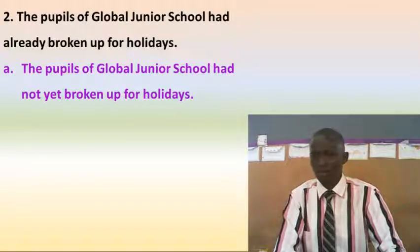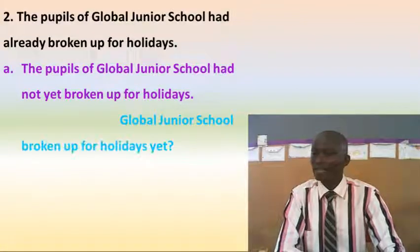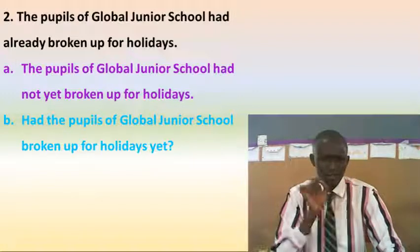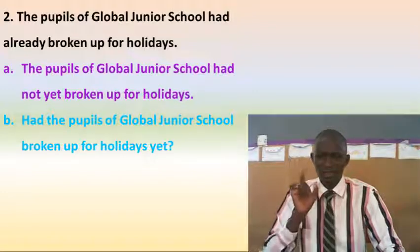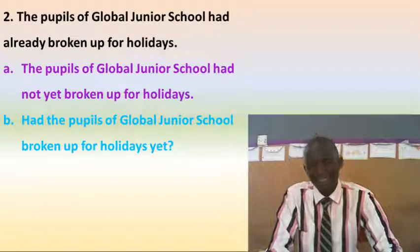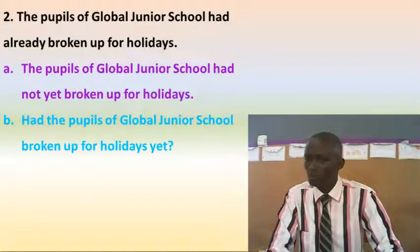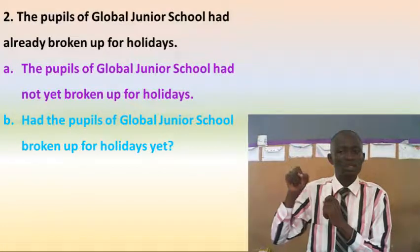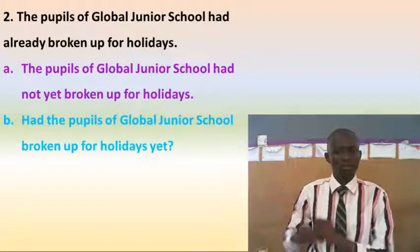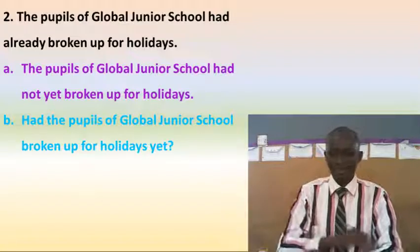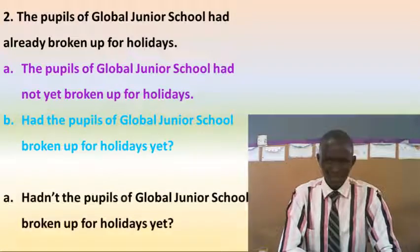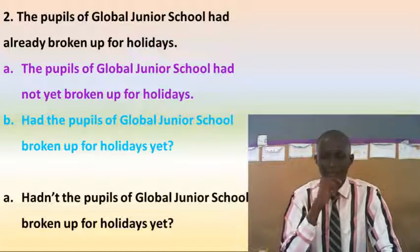For the interrogative form: 'Had the pupils of Global Junior School broken up for holidays yet?' Don't forget to put the question mark. Then in a negative question: 'Hadn't the pupils of Global Junior School broken up for holidays yet?' Just check yourself and mark yourself right. If it is wrong, put the correction.